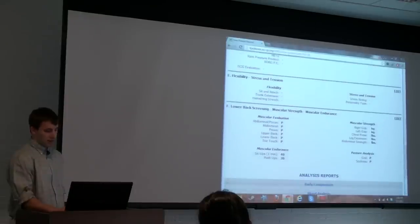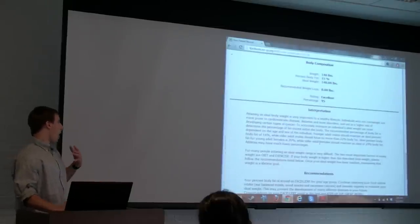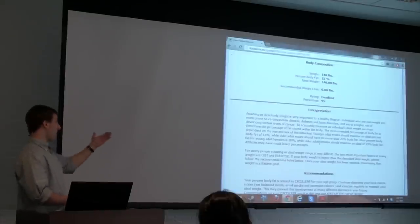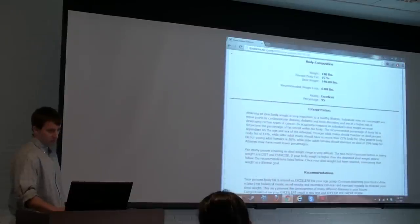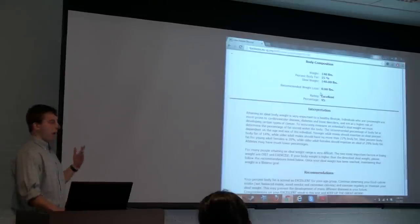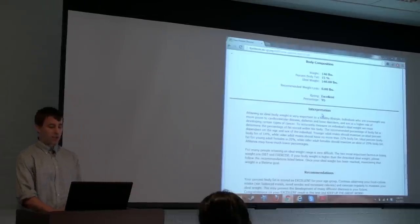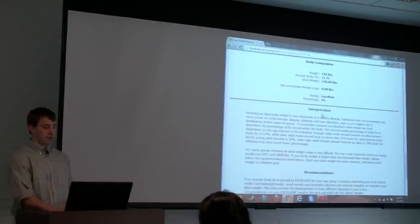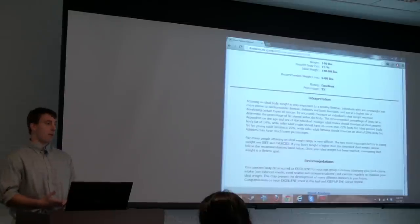Now the analysis reports provide a way to offer recommendations to patients. Not only does it provide a summary of the inputs like weight and percent body fat for body composition and recommended weight loss, but it also provides ratings. In this case, Roger Waters has got an excellent rating of body composition fitness. There's an interpretation here which says a little bit about what percent body fat and ideal weight and recommended weight loss means. It also has recommendations - since his rating is excellent, the recommendations are to keep up the great work and continue exercising and eating appropriately.